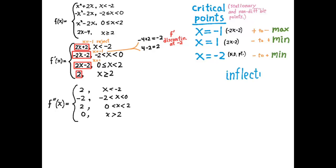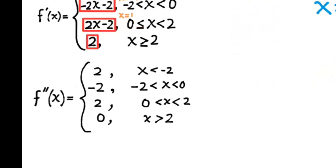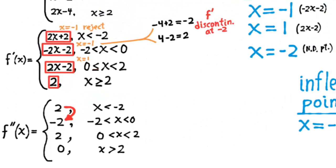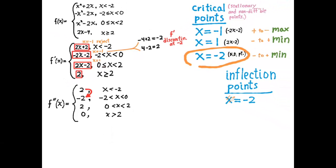Now let's go to the inflection points — places where the second derivative changes sign. Looking at the first two expressions for the second derivative, we see it changes sign at the first junction point x equals negative 2. But does that mean negative 2 is an inflection point? Careful! Remember, x equals negative 2 was a non-differentiable point. There's another requirement of inflection points besides the second derivative changing sign: you also have to have a tangent line that exists. So x equals negative 2 is not an inflection point — we reject it because there's no existing tangent line there.